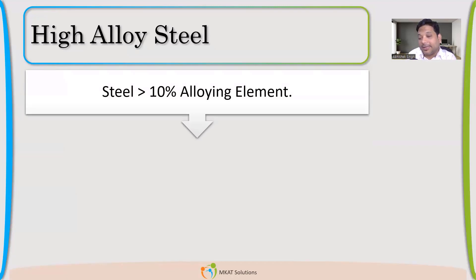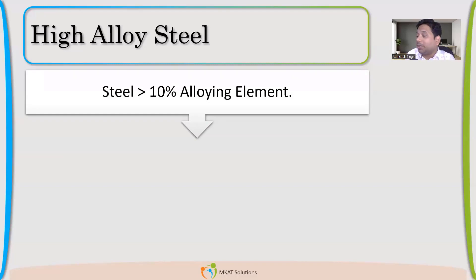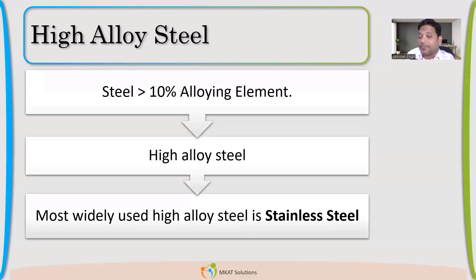Chromium is the material which reacts with oxygen and makes a passive layer. Any steel having a chromium percentage more than 12% is qualified as stainless steel. Any steel having chromium percentage more than 12 will be qualified as stainless steel.